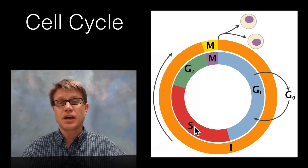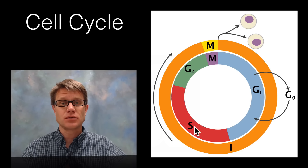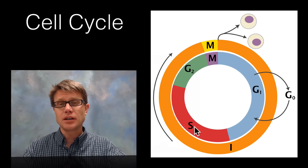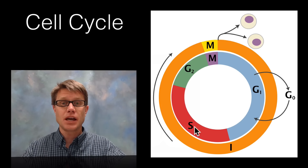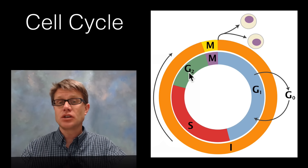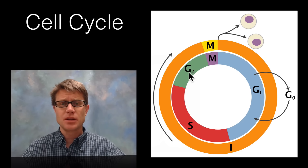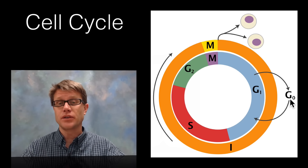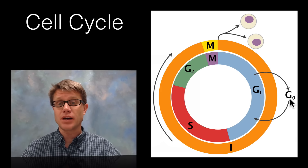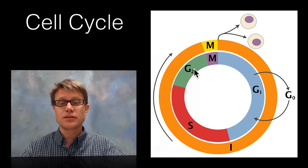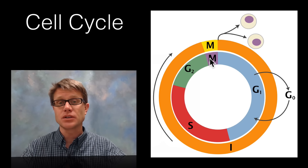The cell then enters into the S phase, or synthesis phase, where it's duplicating all of the DNA. Then finally it goes into the G2 phase where the cell continues to grow. Some cells don't go through this — they don't copy themselves, like nerve and muscle cells — and they enter into what's called a G0 phase and never divide. But if you are going to divide, after G2 you go into the M phase, which is the mitosis where we're dividing the nuclei.